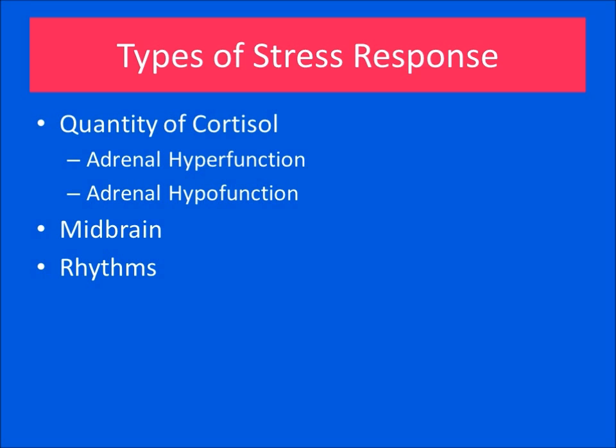Before we start talking about the rhythms, let's give an overview of the different kinds of stress responses. Each of these stress responses is treated differently, so it's important to know the difference. Please remember that cortisol is the most important hormone with regard to prolonged stress. There can be problems with the amount of cortisol released from the adrenal glands — either too much or not enough. Too much is called adrenal hyperfunction and too little is called adrenal hypofunction.